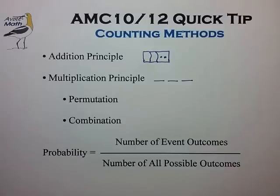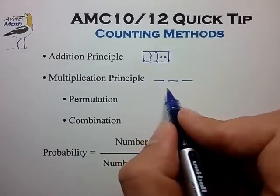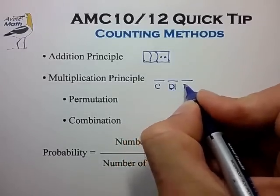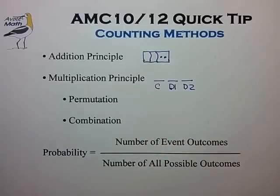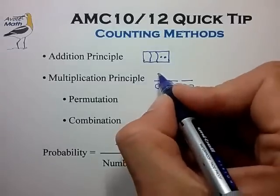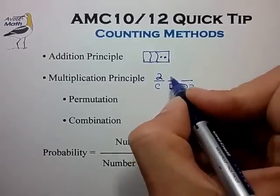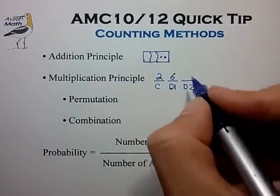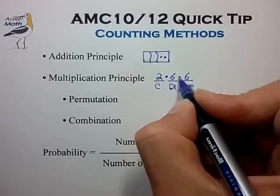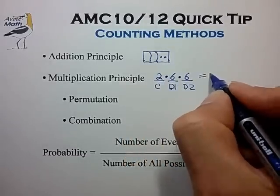For example, if we're tossing one coin and two dice and want to compute the number of all possible outcomes, we can view this as a multi-step counting process with the coin, die number one, and die number two, and multiply the ways that each of these steps can occur. The coin can be tossed in two possible ways, the first die in six, and the second die also in six. The total number of combinations is 2 times 6 times 6, which is 72.